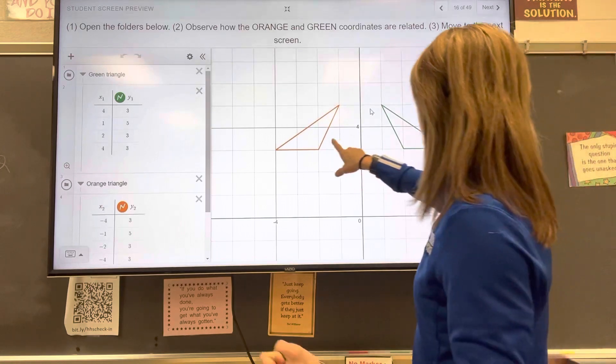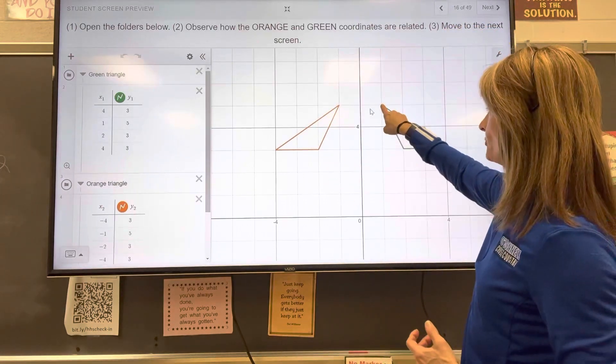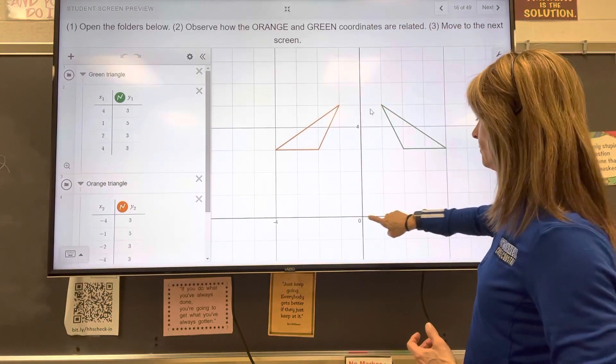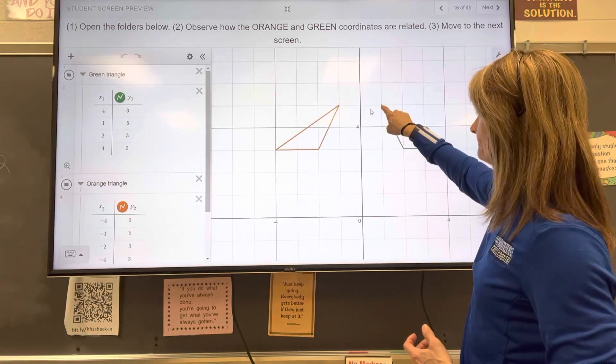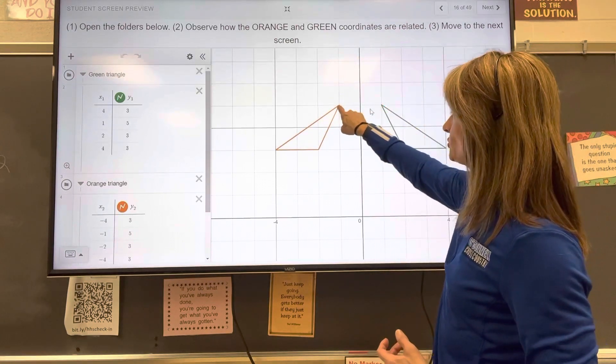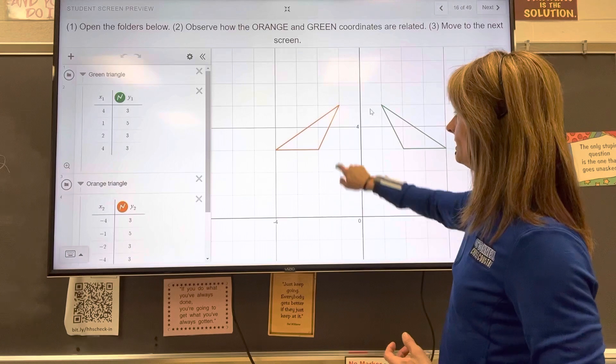So we can see that, for example, this ordered pair right here on the green triangle is at 1, 5. That same location on this triangle here is at negative 1, 5.